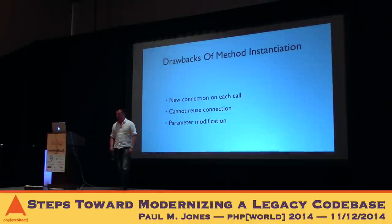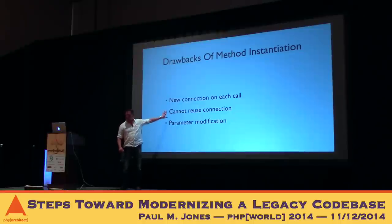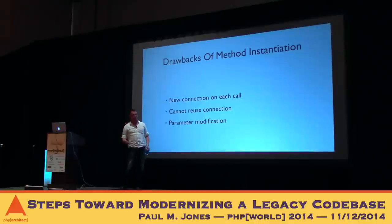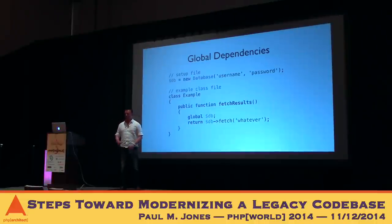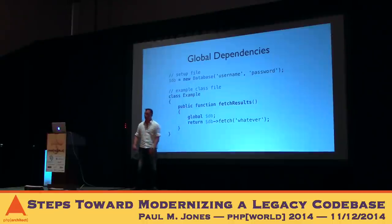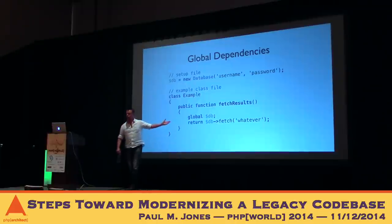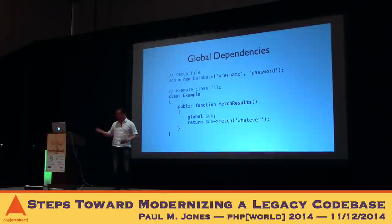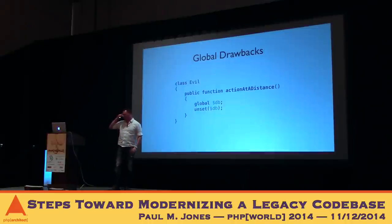You discover the global keyword: you create a variable in the global namespace in a setup file, and anytime you need it, you say 'global $db' and it drags it into the current scope. Solution! We've got one connection, we can share it across everything, we only have to change username and password in one place. But here's the problem. The quantum people have something called spooky action at a distance. Because this global is shared, anytime you change it in one place, it changes everywhere else instantaneously. If someone unsets that database connection in one of their functions, guess what? No more database connection. Good luck tracking that bug down.